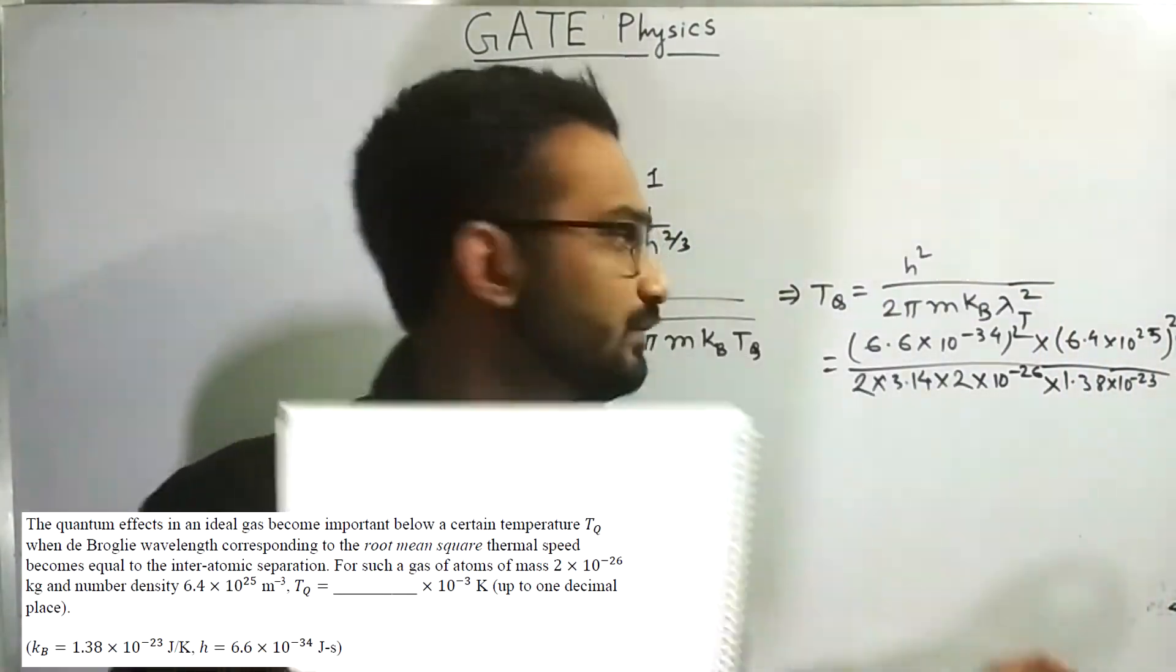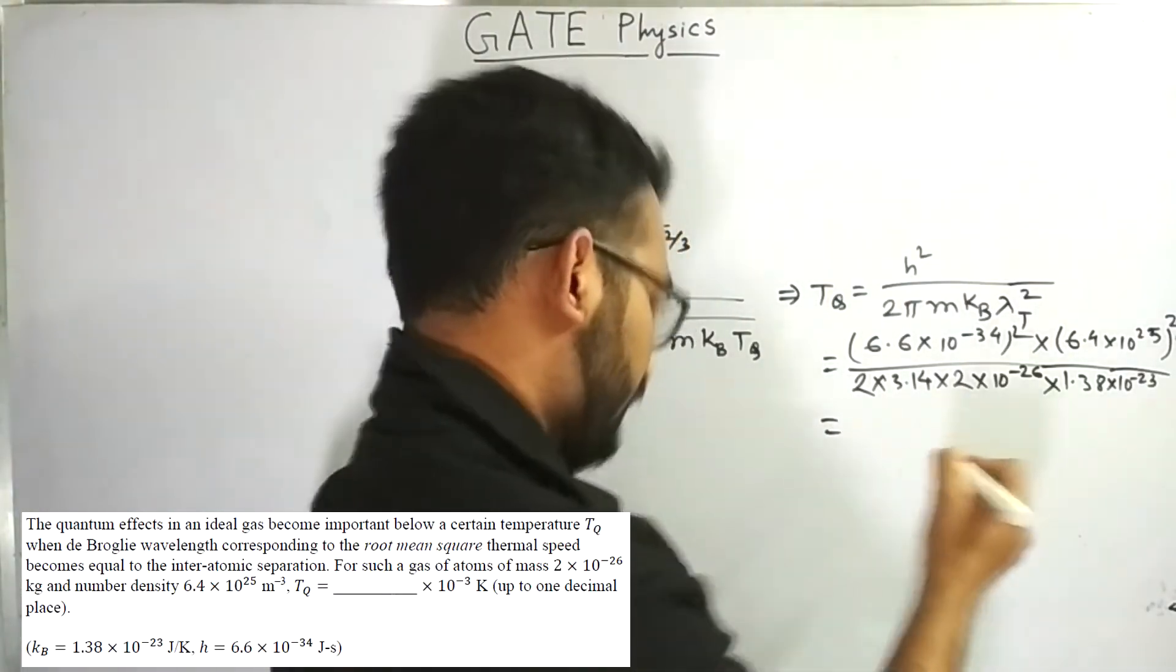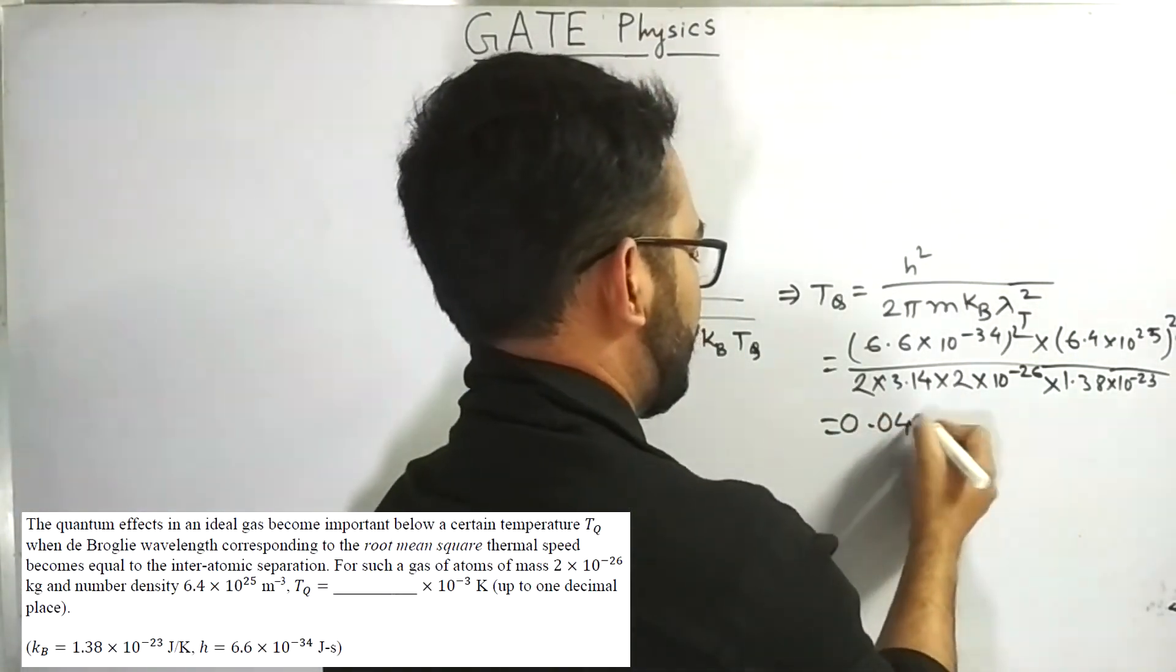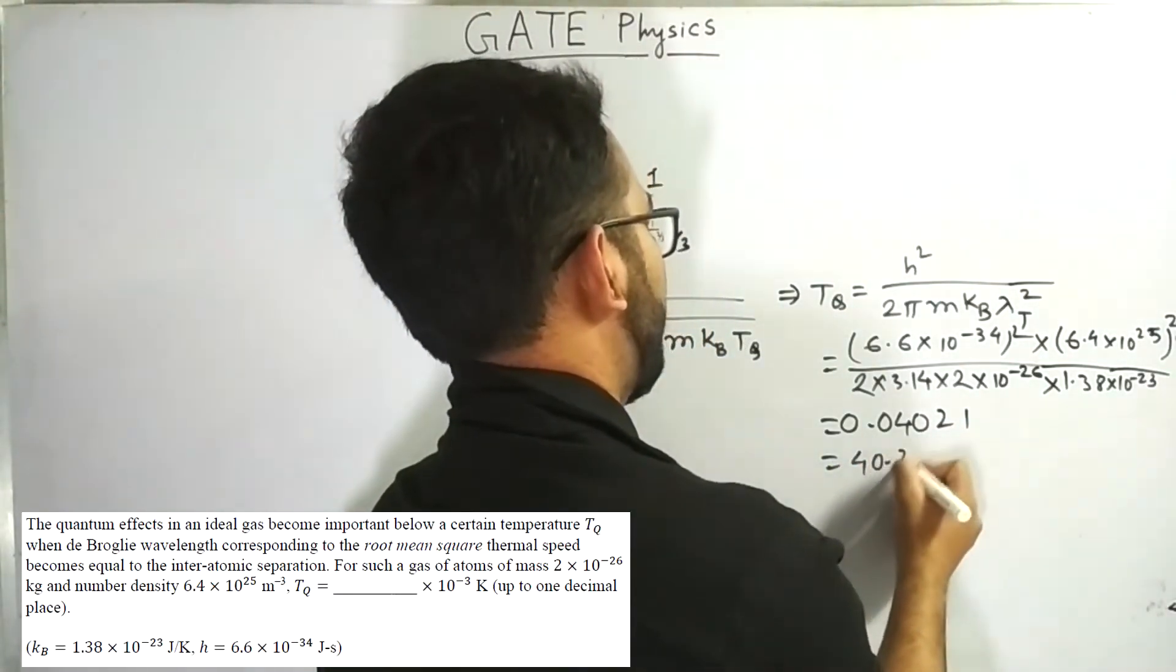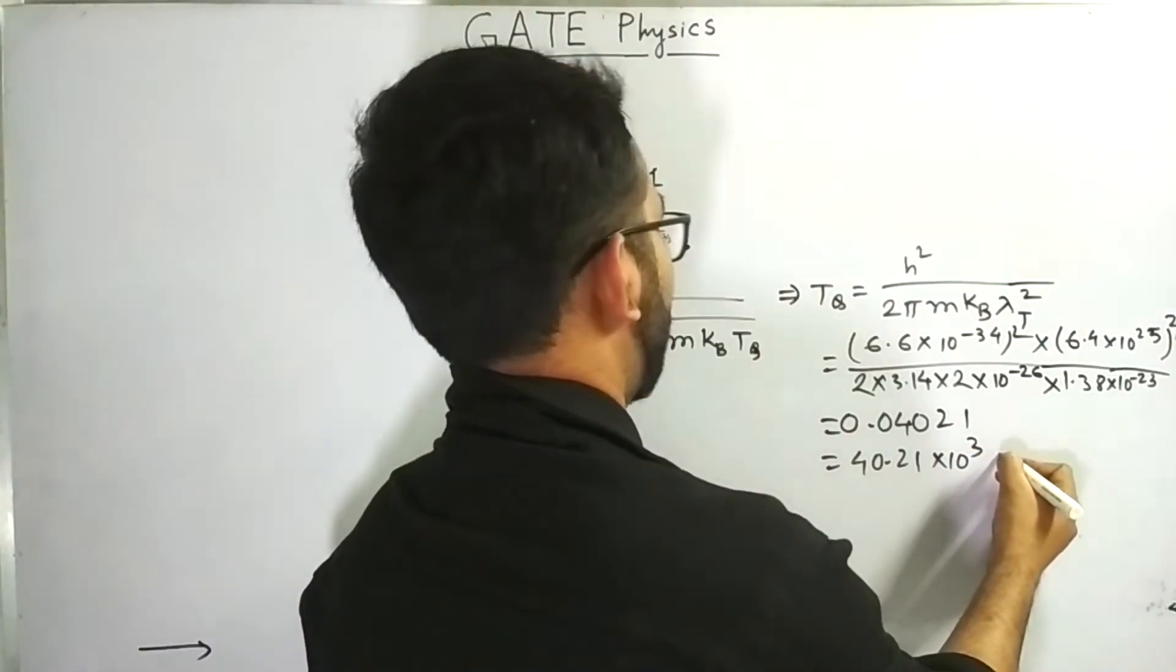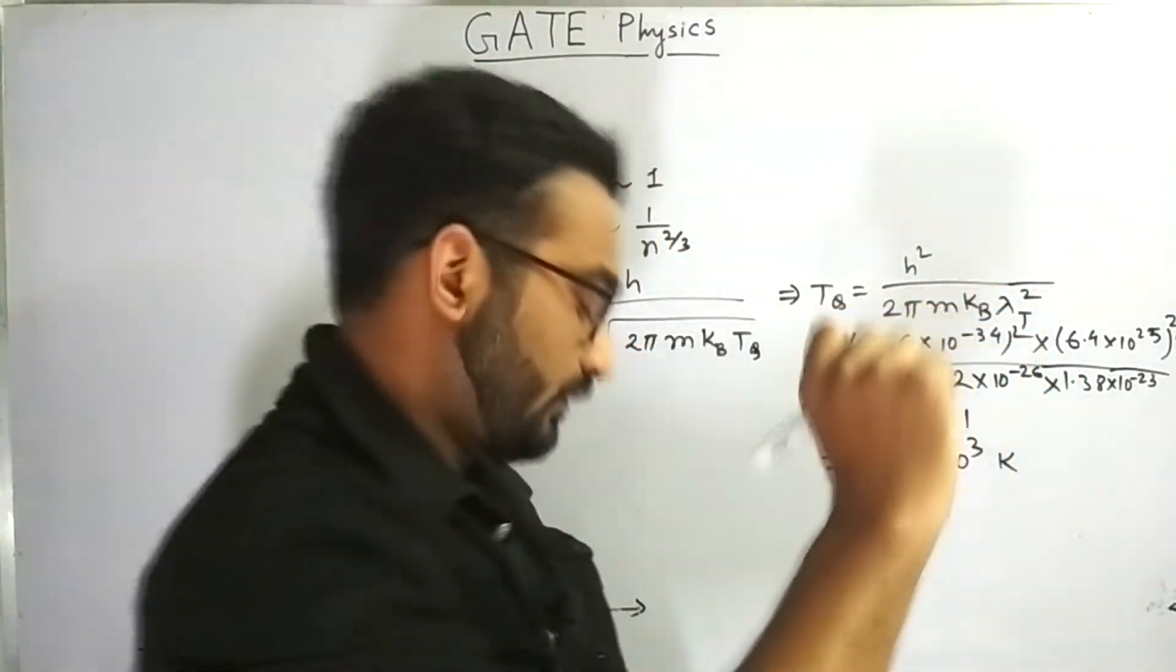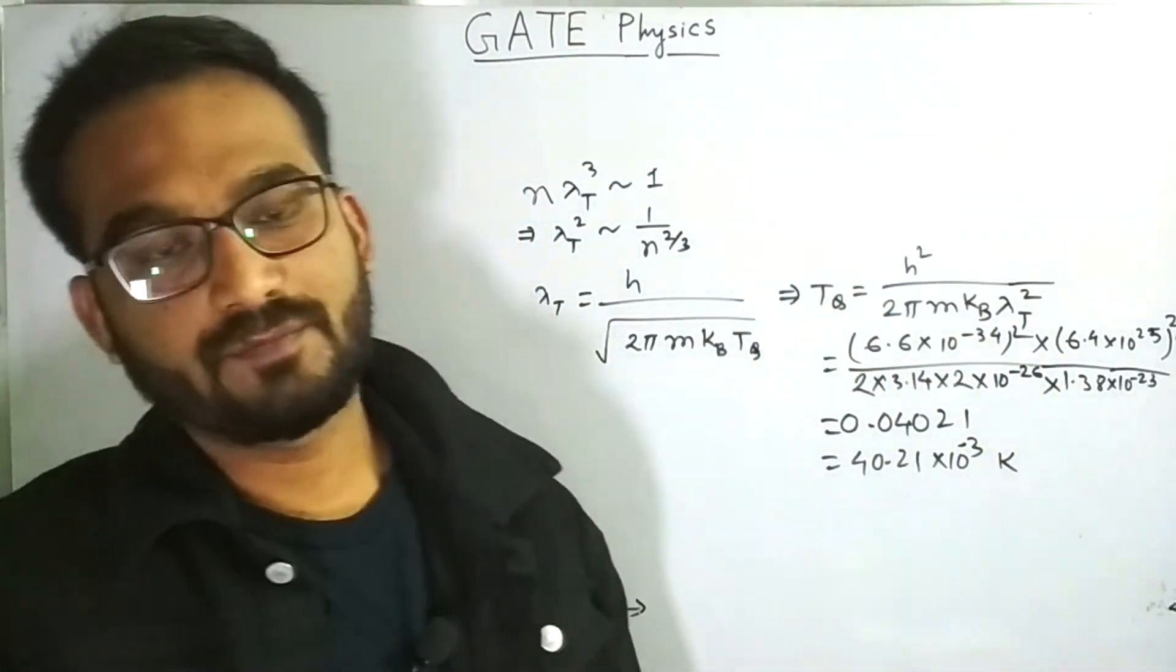Now, if you calculate, then you will get 0.04021 means 40.21 into 10 to the power minus 3 Kelvin. Sorry, it will be 40.21 into 10 to the power minus 3 Kelvin.